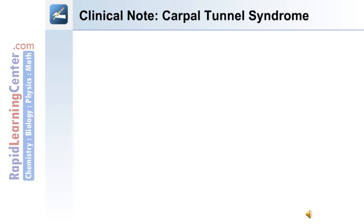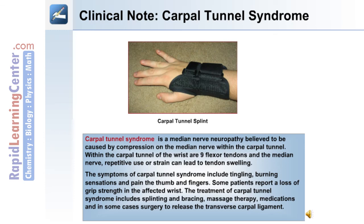The following is a clinical note on carpal tunnel syndrome. Carpal tunnel syndrome is a median nerve neuropathy believed to be caused by compression on the median nerve within the anatomical carpal tunnel. Within the carpal tunnel of the wrist are nine flexor tendons and the median nerve. Repetitive use or strain can lead to tendon swelling. Symptoms include tingling, burning sensations, and pain in the thumb and fingers, and some patients report a loss of grip strength in the affected wrist. Treatment includes the use of splints and braces, massage therapy, medications, and in some cases surgery to release the transverse carpal ligament.